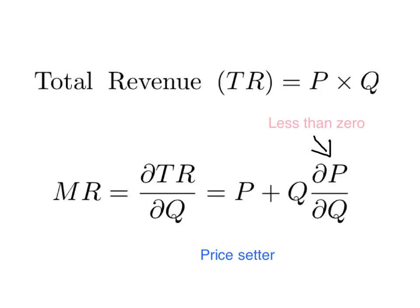Notice what that immediately implies: the marginal revenue for a price-setter like a monopoly must be price less something, because that second term is negative. So marginal revenue is going to be less than the price. The marginal revenue at any quantity for a monopoly will be less than the price that the monopoly can sell that quantity for in the marketplace.